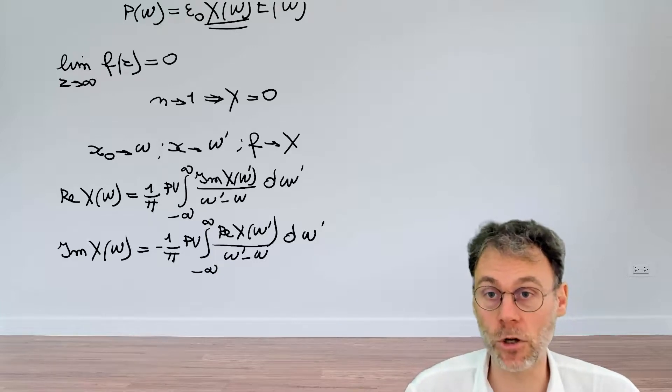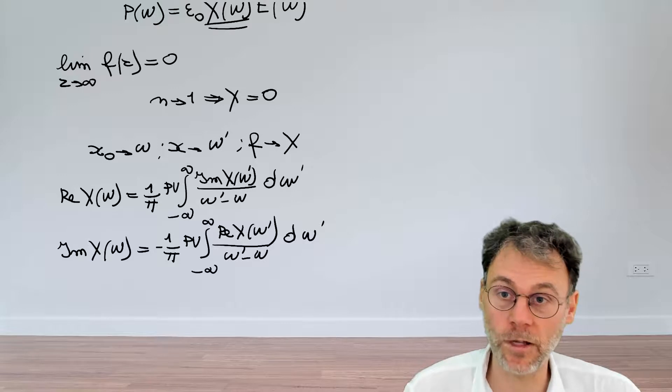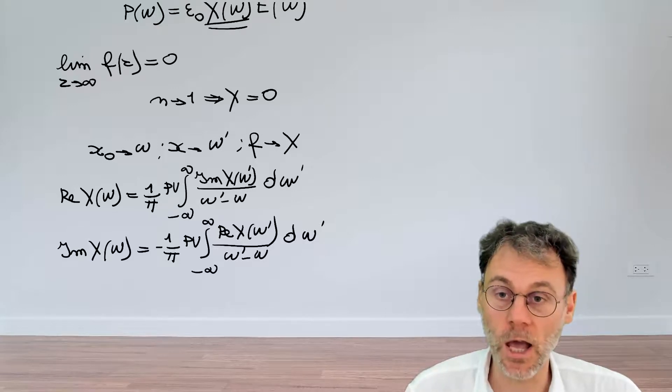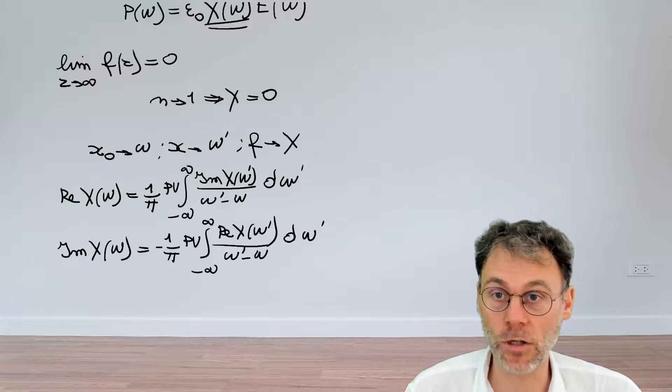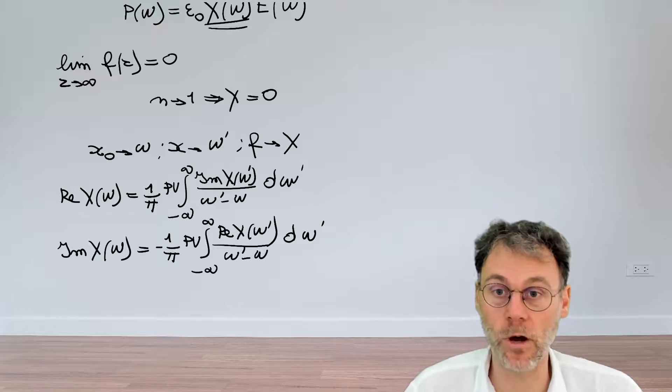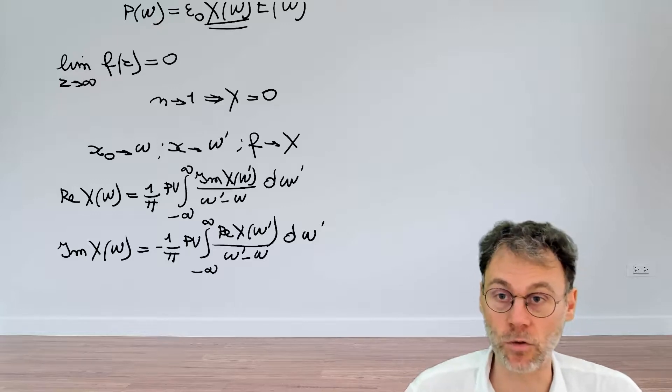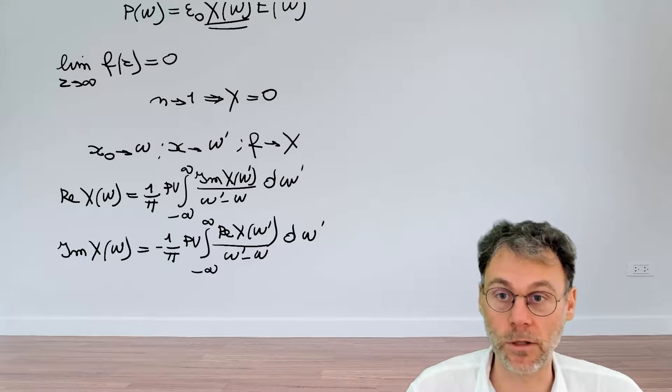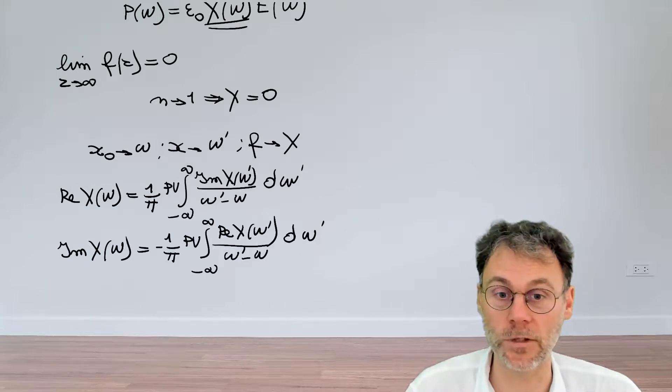But that's not the only possible choice. Actually, pause the video and try if you can come up with a different function f of z, one that will give us some information not related to omega squared, not related to the refractive index squared, but rather directly related to the refractive index. Pause the video and see if you can come up with an alternative function f of z here.